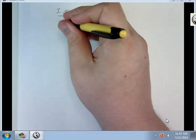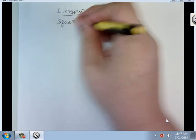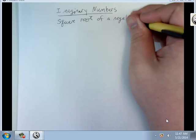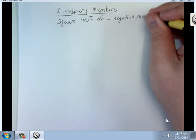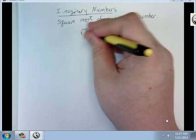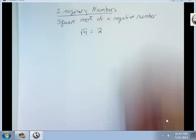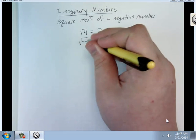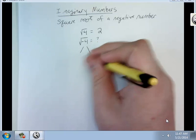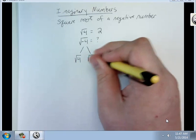So what is an imaginary number? Square root of a negative number. We know that the square root of 4 equals 2, but what about the square root of negative 4? Well, we know that we can rewrite this as square root of 4 and square root of negative 1.